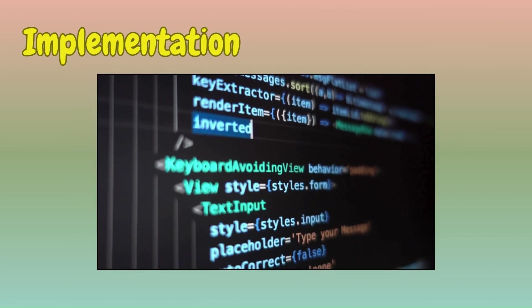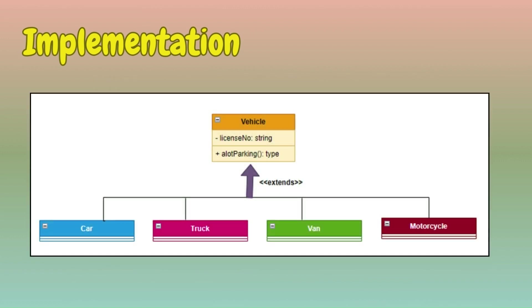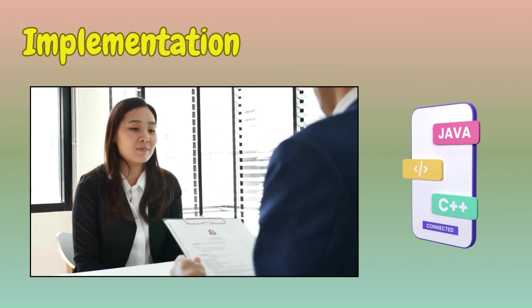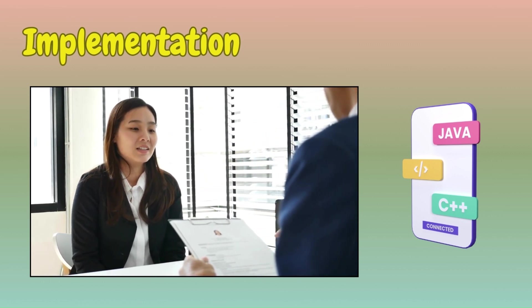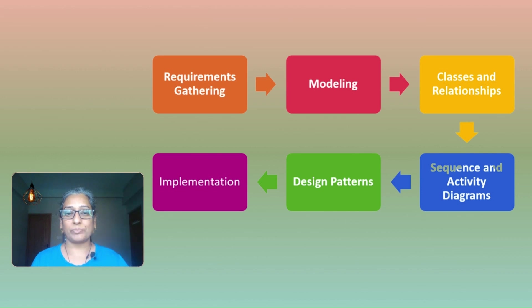The final step is implementation. We should be proficient in coding the classes and relationships identified during the design phase. The interviewer may expect us to code a high level structure of the system, and may also ask us to code one of the classes at the implementation level.